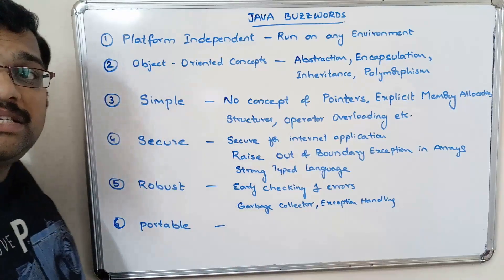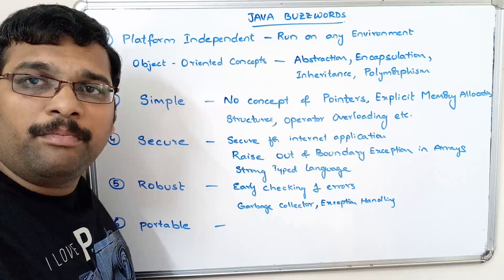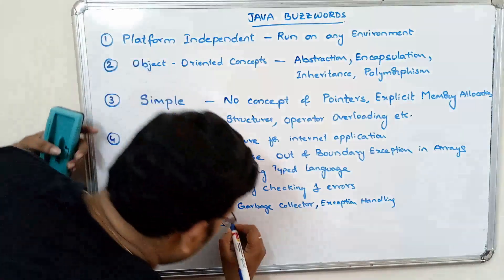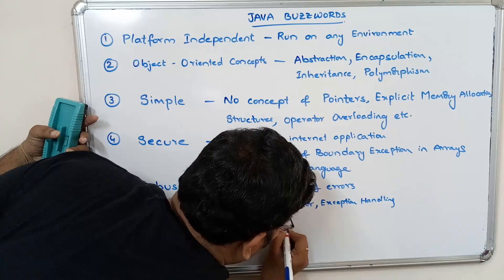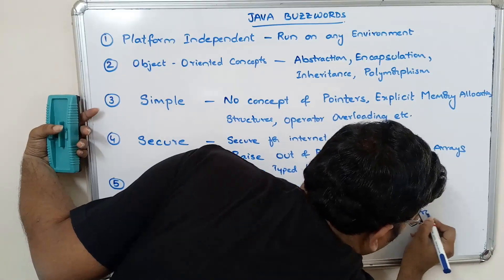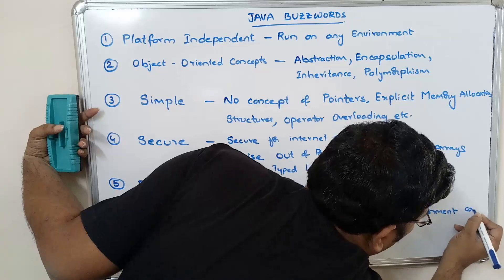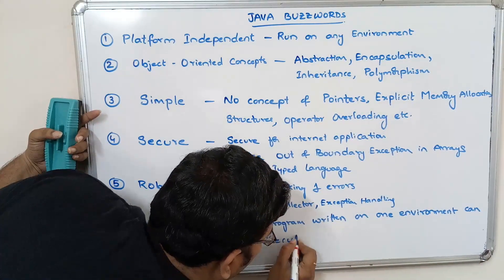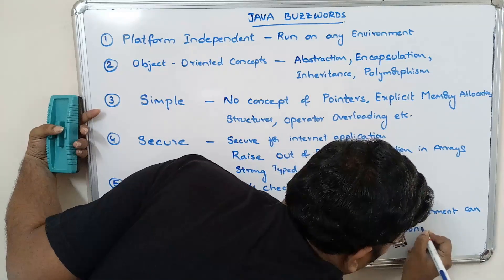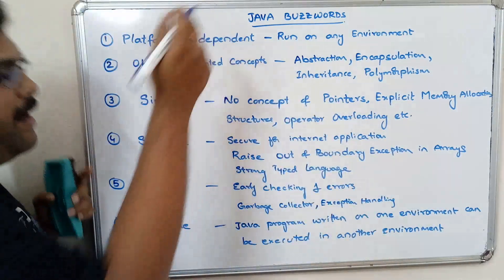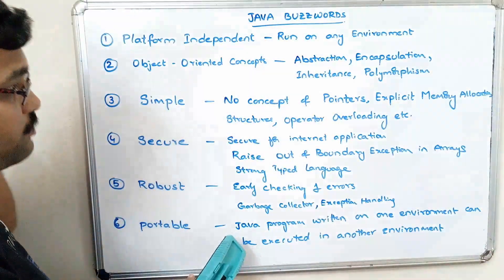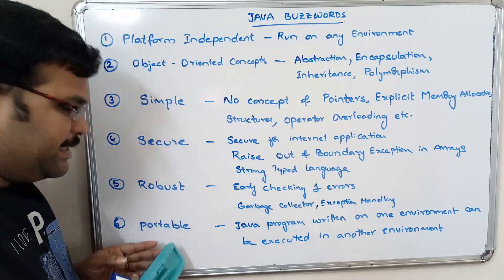Next, Java is portable. That means we can write a Java program in one environment and implement the same program in another environment. A Java program written in one environment can be executed or implemented in another environment. That's why we call it portable — Java programming is portable.